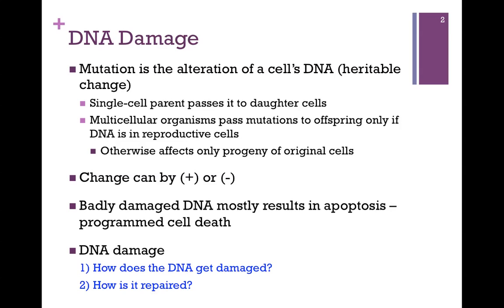These mutations or changes can be positive or negative. Most often, they're negative. Cells also have a system in place so that if the DNA has been badly damaged, it will result in apoptosis — that's a kind of programmed cell death. This ensures that a cell carrying badly damaged DNA will not produce progeny cells.